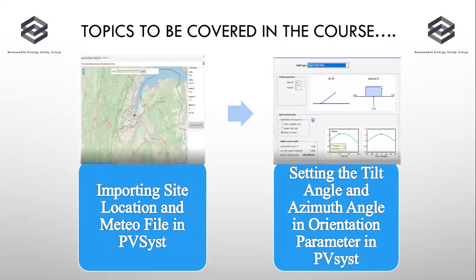Inside these two case studies, we'll look at important parameters such as how to import the site location — that is, the meteo file — into PVSyst. For proper energy yield simulation, we require the Global Horizontal Irradiation (GHI), which will be downloaded using the Meteonorm file or the NASA database. We'll see exactly how to do this for importing the site location and meteo file.